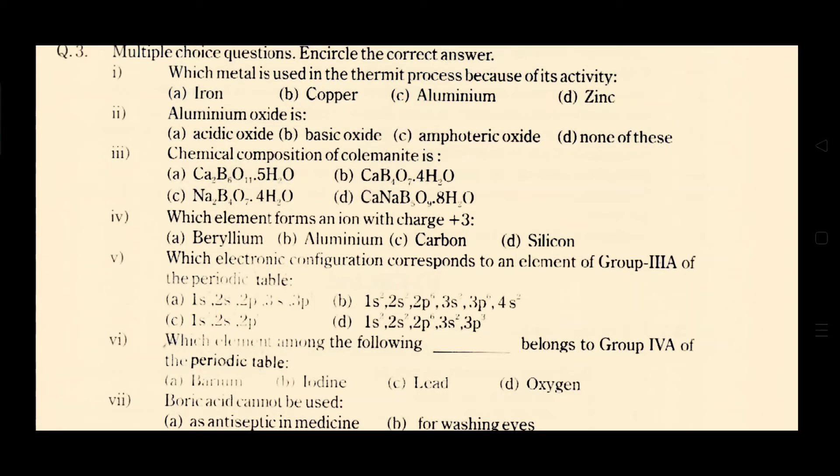Now let's try to solve the multiple choice questions of the exercise in chapter number three. And the first MCQ is which metal is used in the thermite process because of its activity? The name of that metal is aluminium and option C is correct. In the second multiple choice, aluminium oxide is, as we know aluminium oxide is amphoteric in nature, so option C is correct.